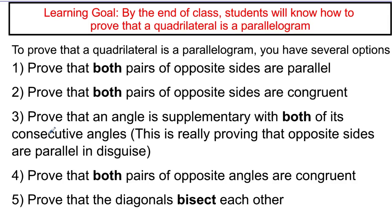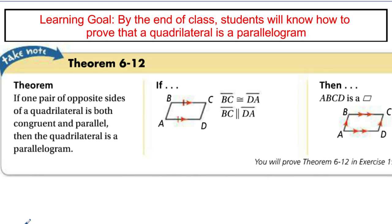To summarize, we have five properties to prove a quadrilateral is a parallelogram: opposite sides congruent, opposite angles congruent, diagonals bisecting each other, and consecutive angles supplementary. There's also a sixth strategy not directly based on those properties: if you can show that one pair of opposite sides is both congruent and parallel — the same pair — then it's a parallelogram. This only requires information about one set of sides rather than both.